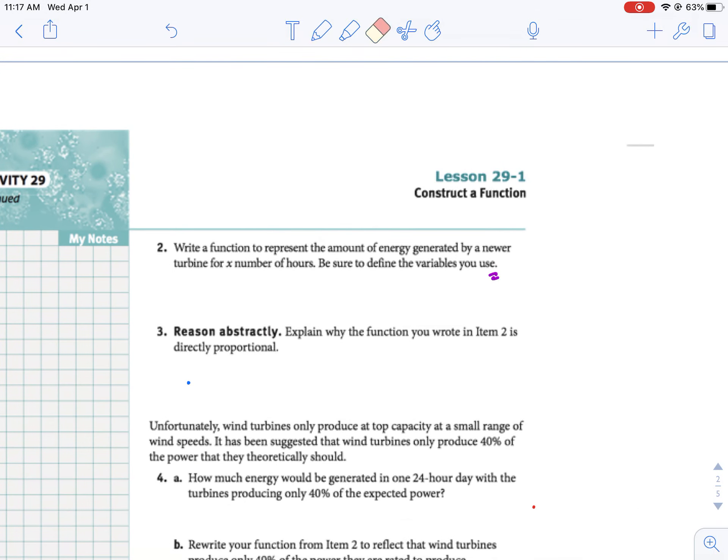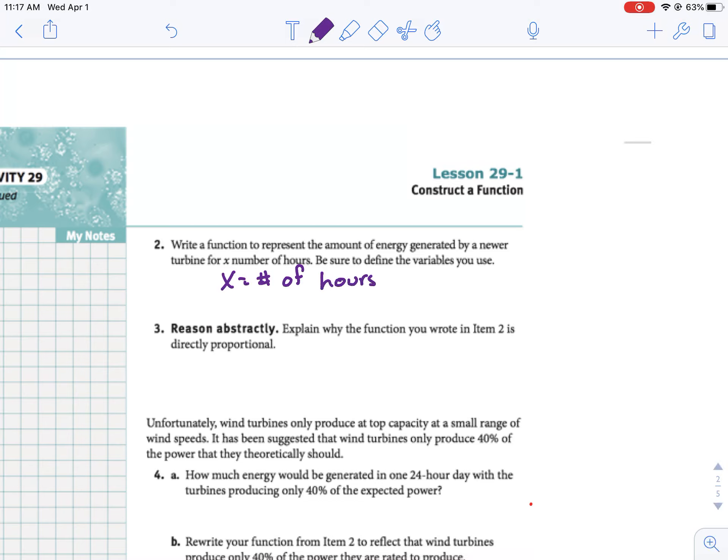So then the next one says write a function that represents the amount of energy by a newer turbine each hour. We know that it's 1,800 kilowatts per hour. It does tell us to use x for number of hours and to define our variables. So x is the number of hours, and y equals the number of kilowatts. So we know the number of kilowatts is going to be 1,800, and it's 1,800 kilowatts per hour, so we're going to multiply that by x.